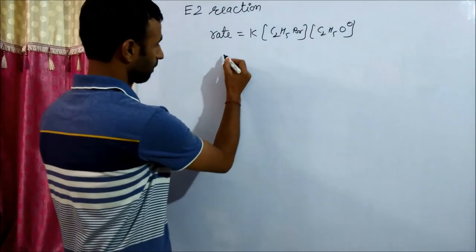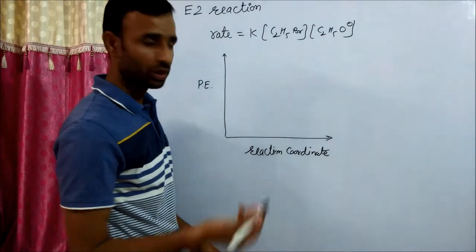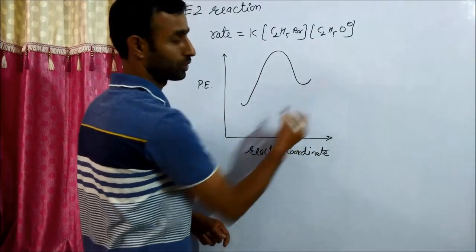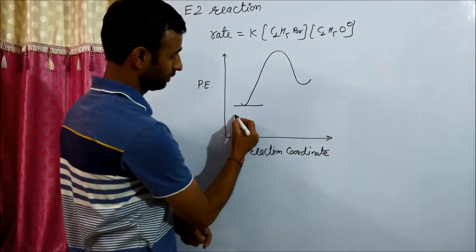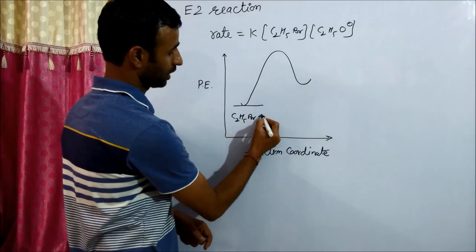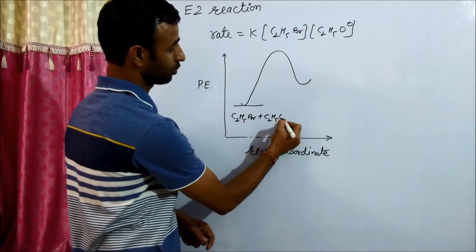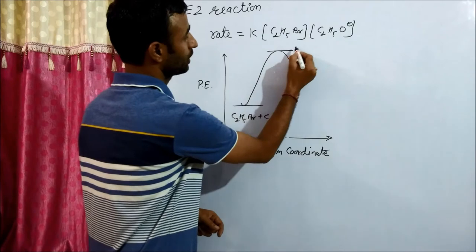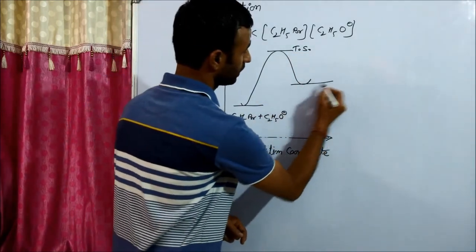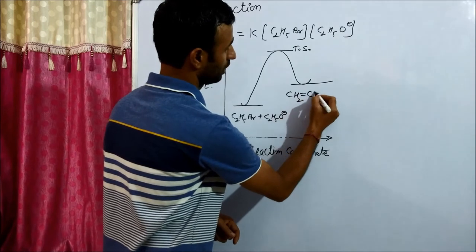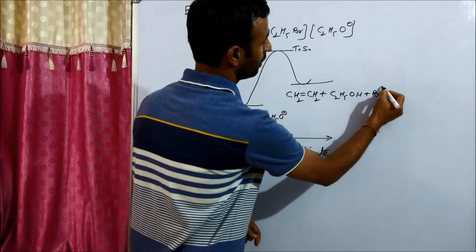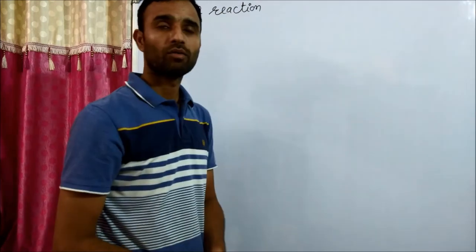If you plot a potential energy diagram, the diagram comes to be like this. These are ethyl bromide and ethoxide ion. This is transition state. And these are ethene along with ethanol and bromide ion.